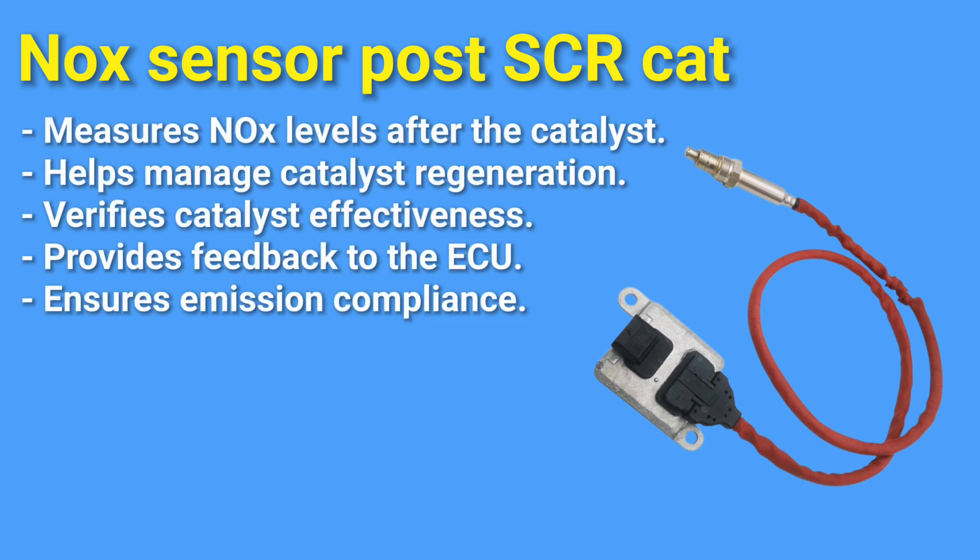The NOx sensor measures nitrogen oxide levels in exhaust from petrol and diesel engines, signaling when catalyst storage is full. Positioned downstream from the catalyst, it alerts the engine control system when nitrogen oxide levels are too high. The system then initiates a regeneration process, temporarily enriching the air-fuel mixture to convert stored nitrogen oxide back to nitrogen, typically every 60 seconds. The NOx sensor uses a ceramic solid electrolyte of zirconium dioxide to conduct oxygen ions at temperatures above 300°C, maintained by a heating element.